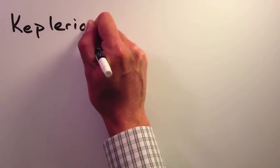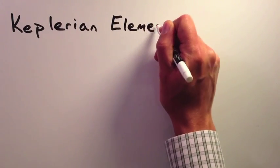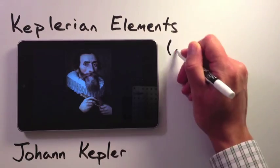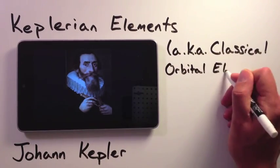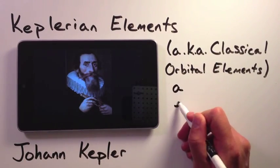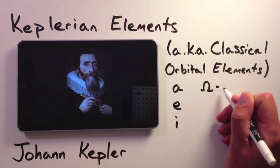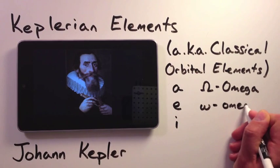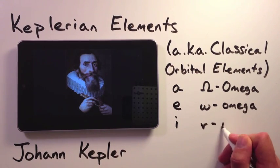The Keplerian elements are a completely different way of describing a satellite orbit. These are named after Johann Kepler, and are also frequently called the classical orbital elements. The way that I remember what these elements are is to think that it's almost like sounding out the vowels in the alphabet: A, E, I, O, O, and Nu.